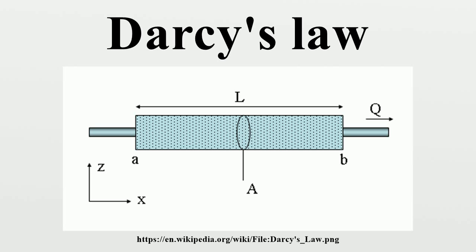The negative sign is needed because fluid flows from high pressure to low pressure. Note: the elevation head must be taken into account if the inlet and outlet are at different elevations. If the change in pressure is negative, then the flow will be in the positive x direction. Dividing both sides of the equation by the area and using more general notation leads to an expression where Q is the flux and is the pressure gradient vector. This value of flux, often referred to as the Darcy flux, is not the velocity which the fluid traveling through the pores is experiencing. The fluid velocity is related to the Darcy flux by the porosity.